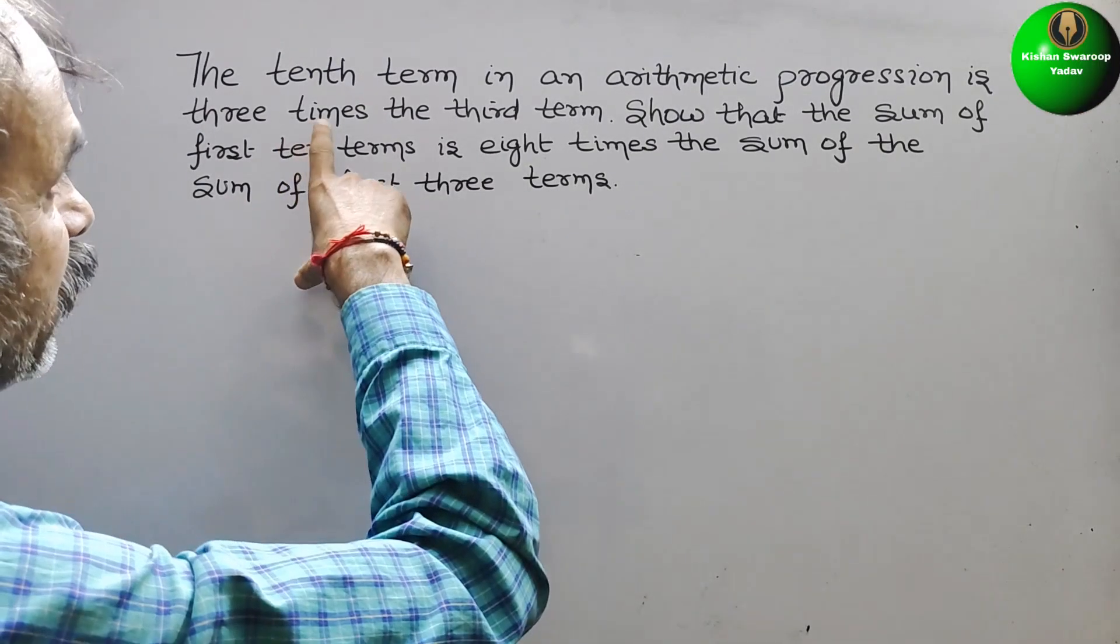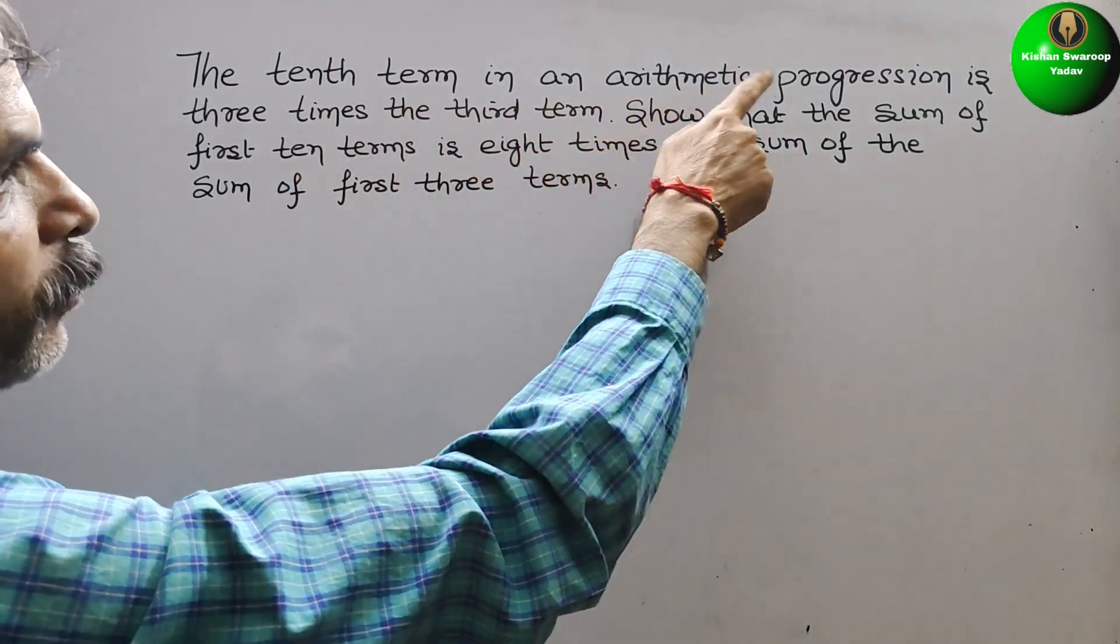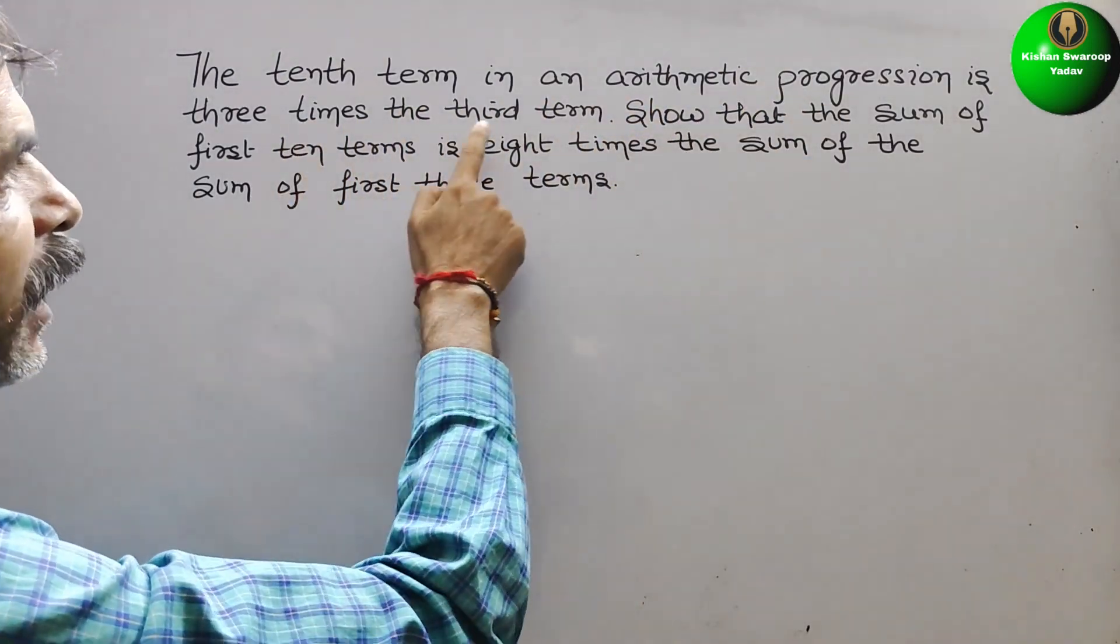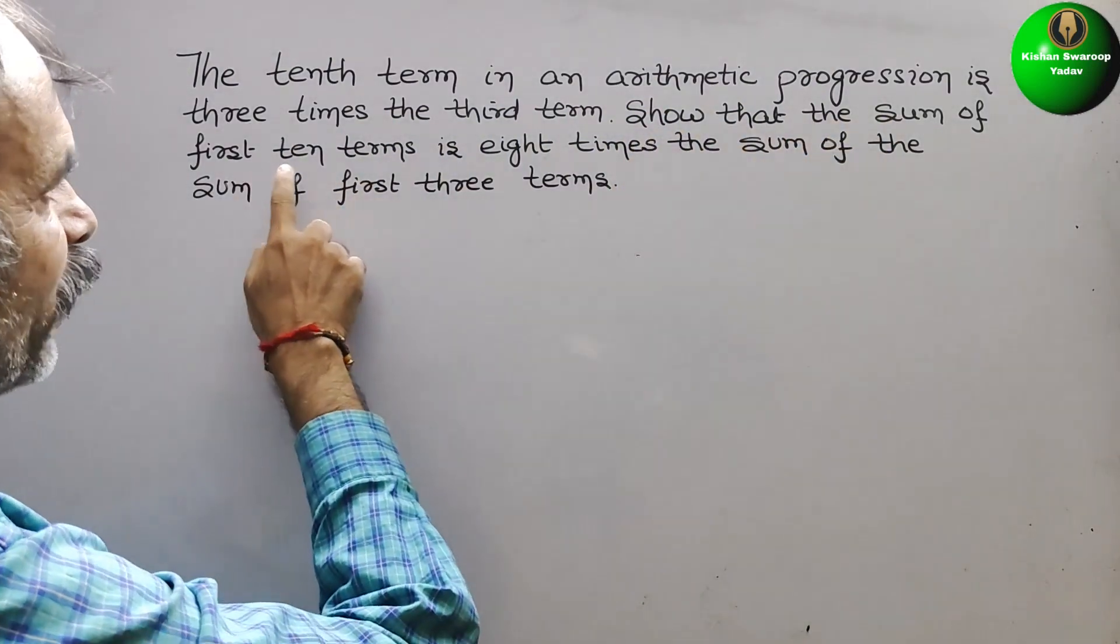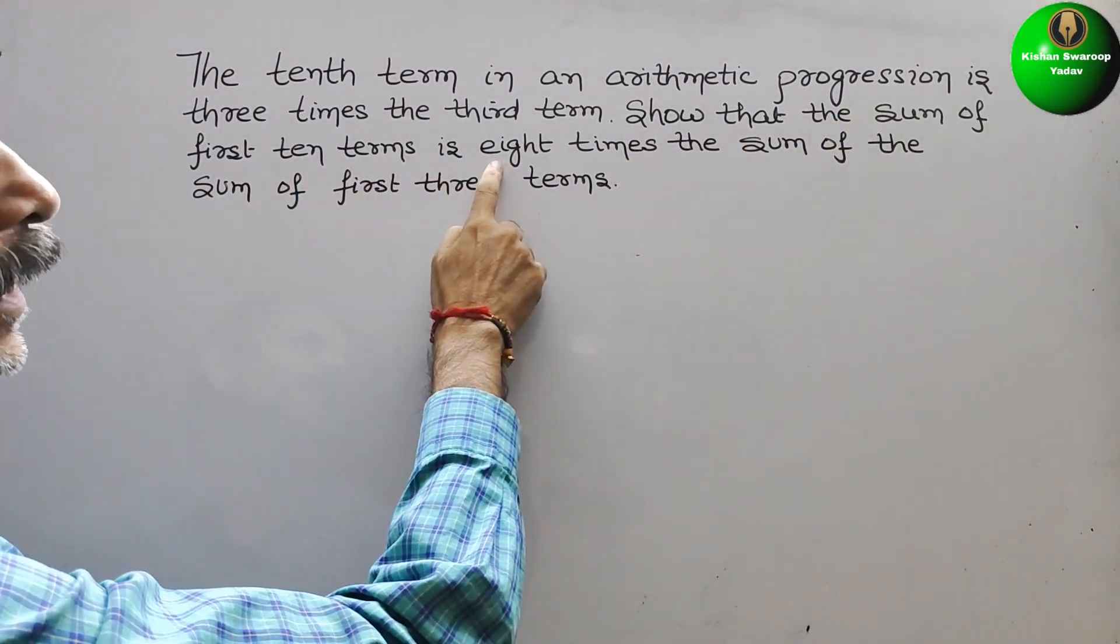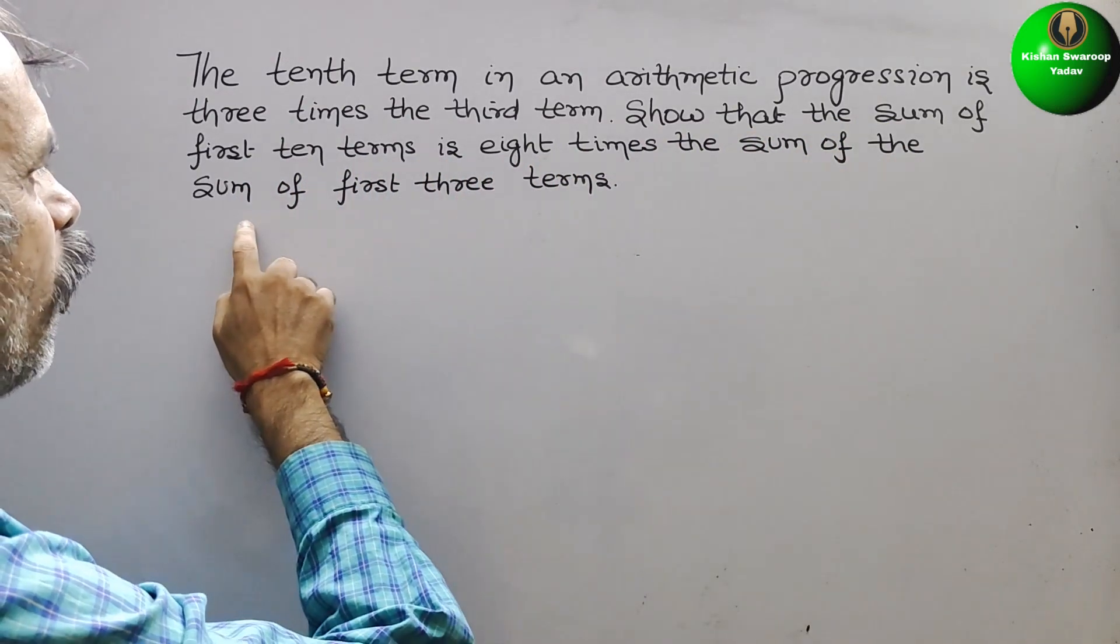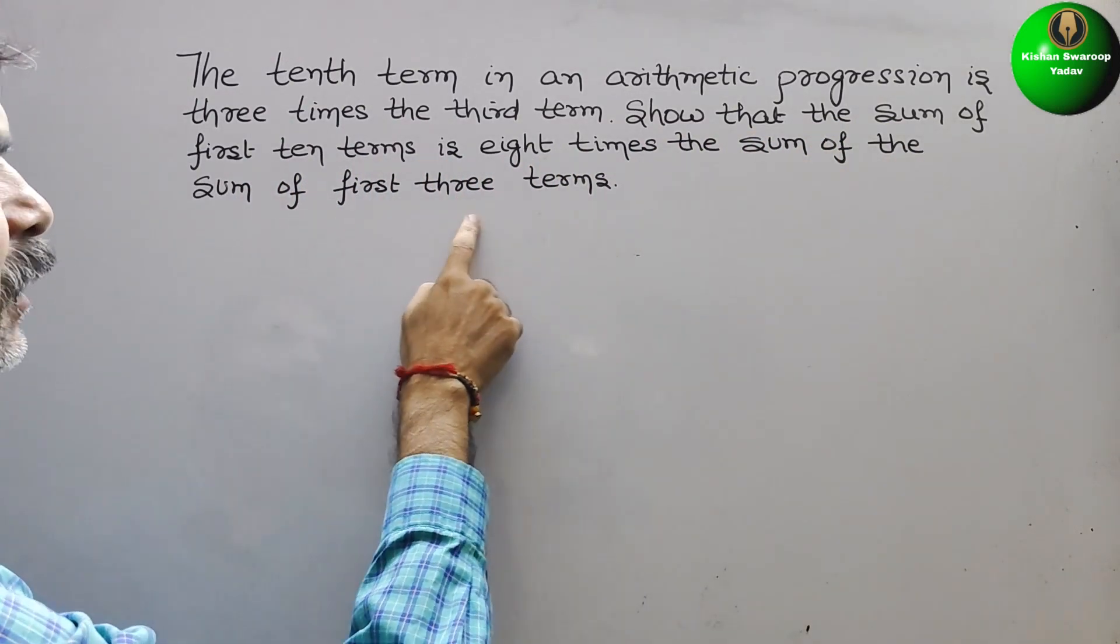Your question is: the 10th term in an arithmetic progression is 3 times the third term. Show that the sum of the first 10 terms is 8 times the sum of first 3 terms.